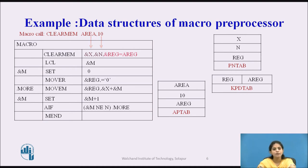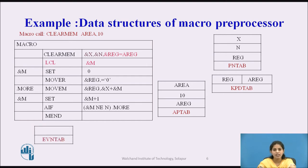Next we process the statement LCL &M. LCL &M creates a local expansion time variable, and the name of that variable is M. We enter that variable into the EVN tab (expansion time variable name table), entering the name M.